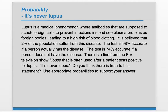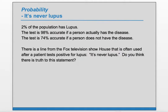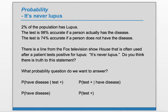First, let's summarize the information given to us. 2% of the population have lupus. The test is 98% accurate if a person has the disease, and 74% accurate if the person does not have the disease. So based on the question, which probability question do we want to answer? Which of these following probability statements will help us answer this question?